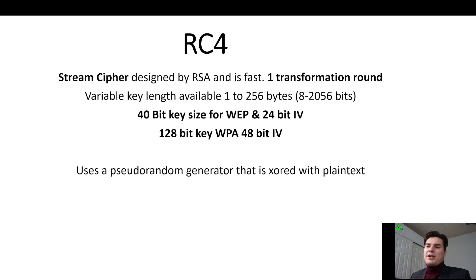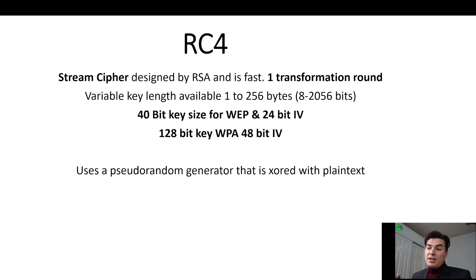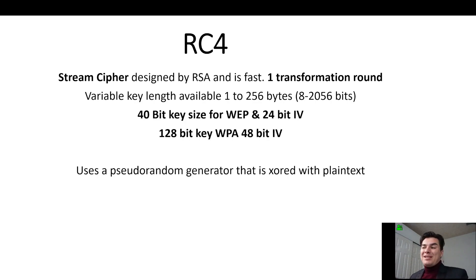RC4 is a stream cipher. It was designed by the RSA, and it's very fast. It uses one transformation round and a variable key length from 1 to 256 bytes, or that's 8 to 2,056 bits. A 40-bit minimum is recommended.